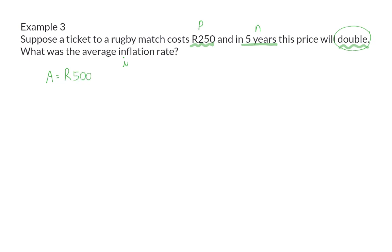Now, we can once again substitute into our equation. To solve i, I'm going to start by dividing by the R250, and then taking the fifth root of that value to get rid of the exponent on the right.